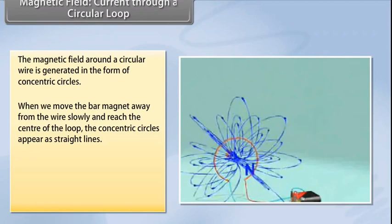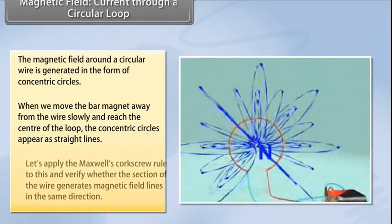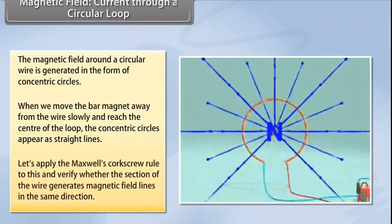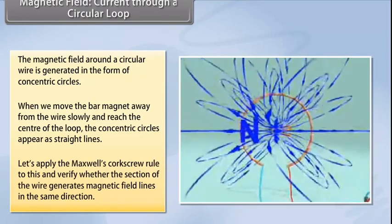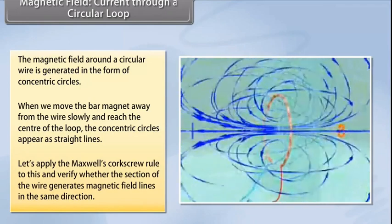The entire magnetic field appears as a straight line. Now try applying Maxwell's corkscrew rule to this and check whether every section of the wire is able to generate magnetic field lines in the same direction.